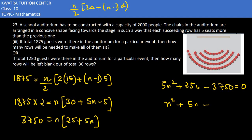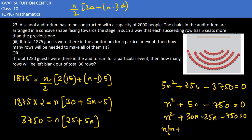Now splitting the middle term: 750 can be split as 30 and 25, giving n squared + 30n − 25n − 750 = 0. Factoring: n(n + 30) − 25(n + 30) = 0, so (n + 30)(n − 25) = 0. Since n cannot be negative, we reject n = −30. Therefore n = 25 rows are needed.